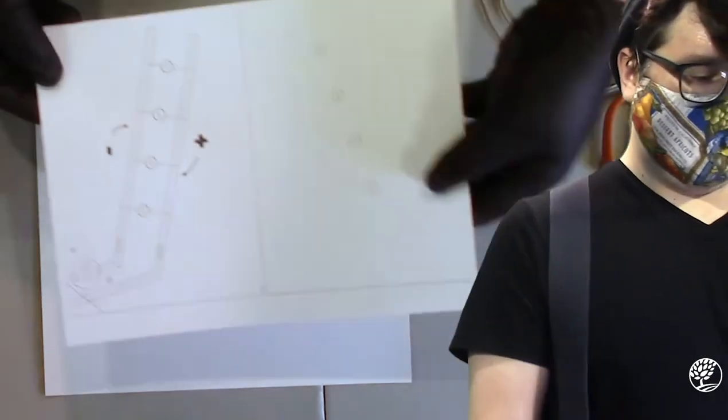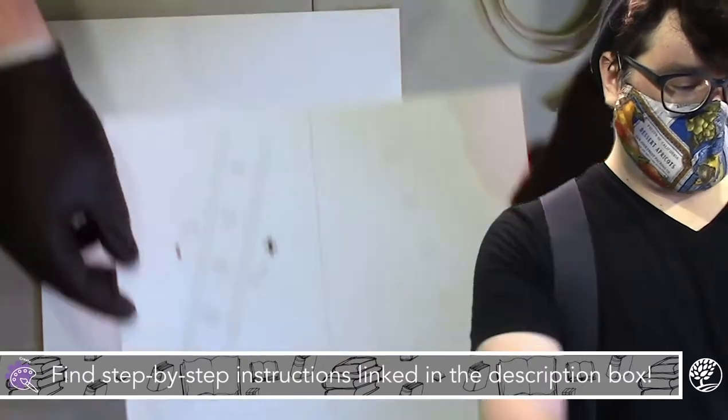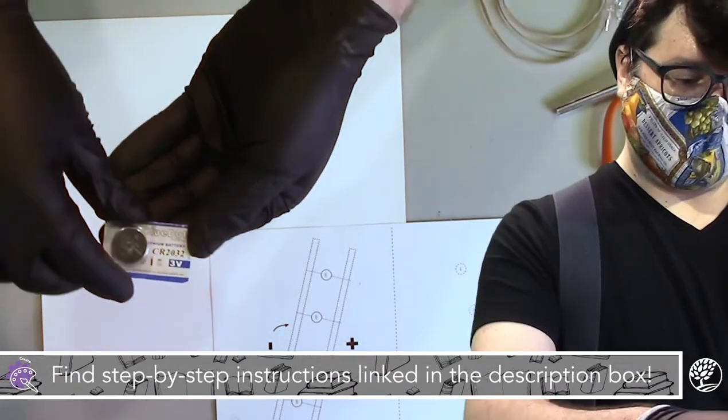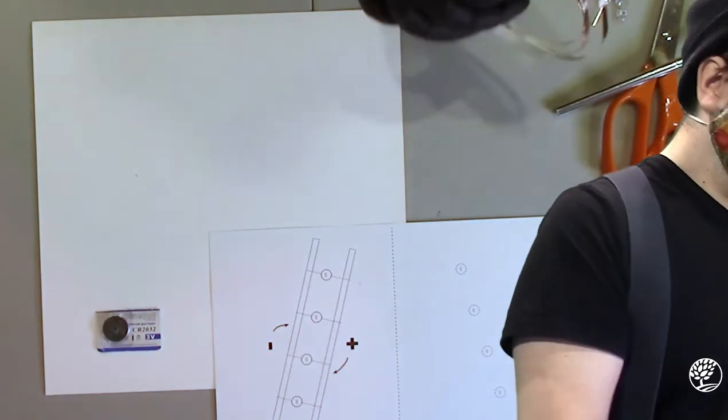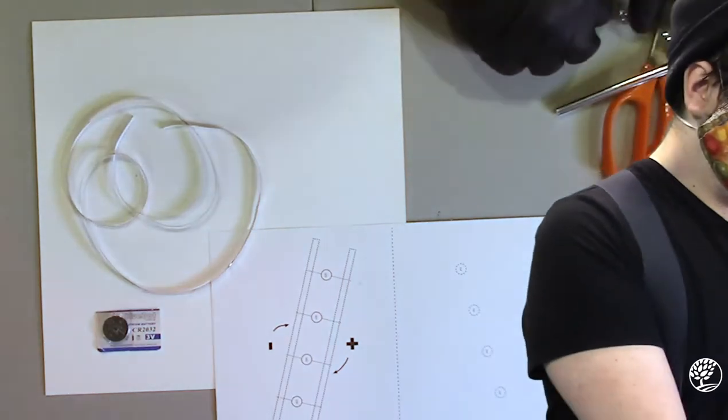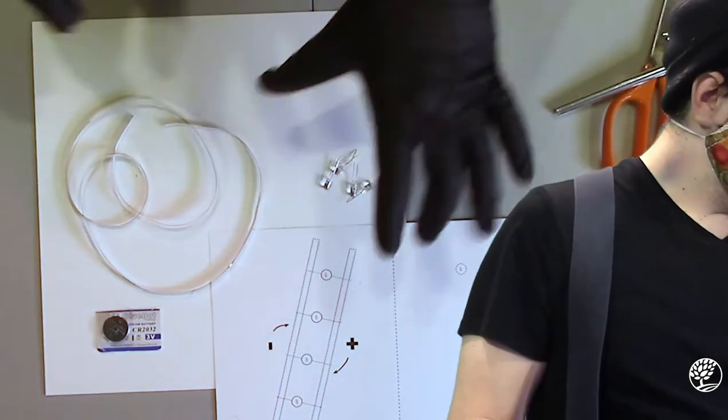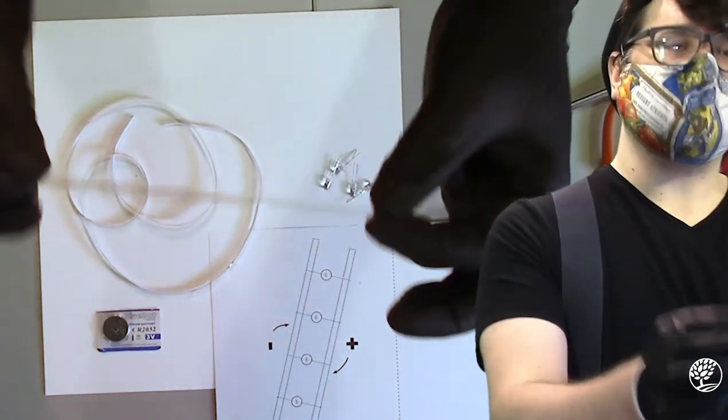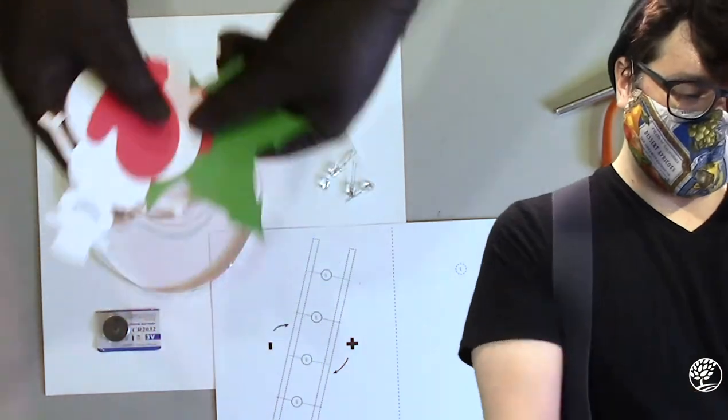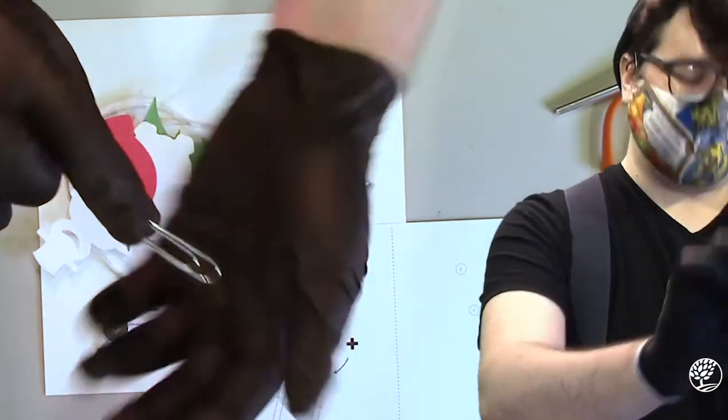Included with the kit is a pre-printed cardstock paper circuit template, a 2032 3-volt coin cell battery, about two to three feet of conductive copper tape, four LEDs, a piece of overhead transparency, some assorted cardstock shapes, and the paper clip that attached the bag to the template.